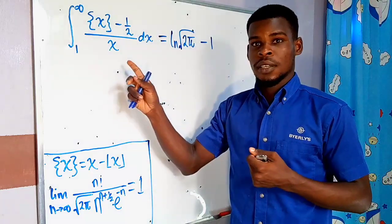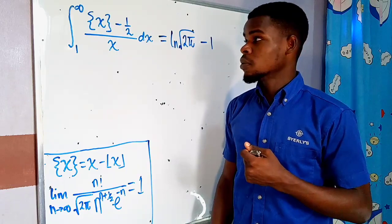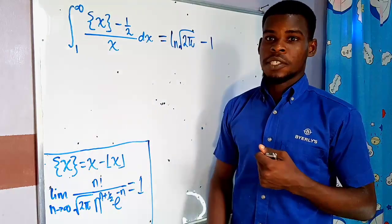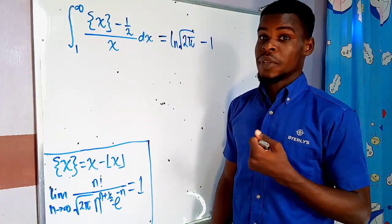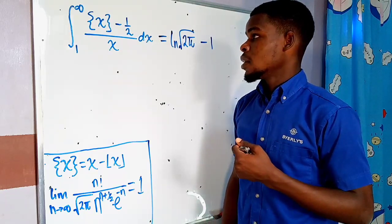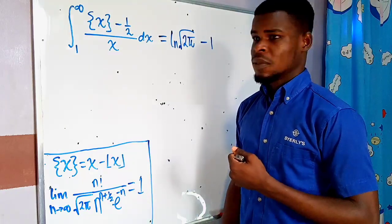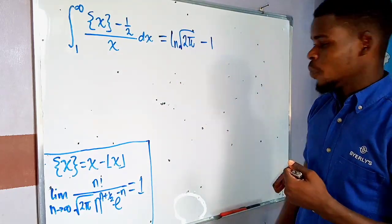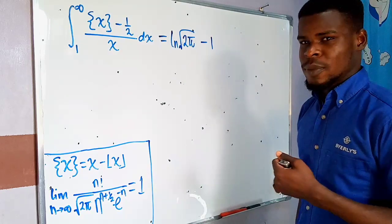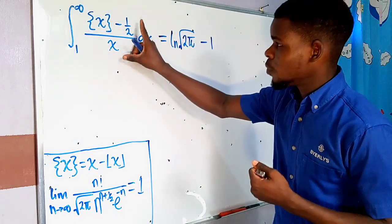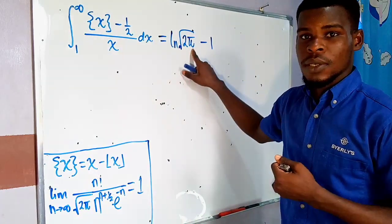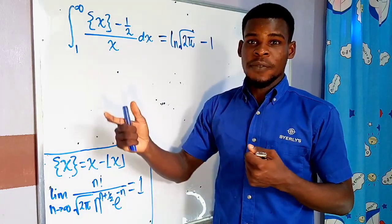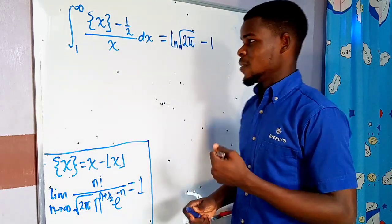This integral here involves the fractional part of x, integrated from 1 to infinity. The answer is quite surprising: the natural logarithm of the square root of 2π minus 1. You might be wondering how we get π from here. This is going to be my first integral involving the fractional part of x.